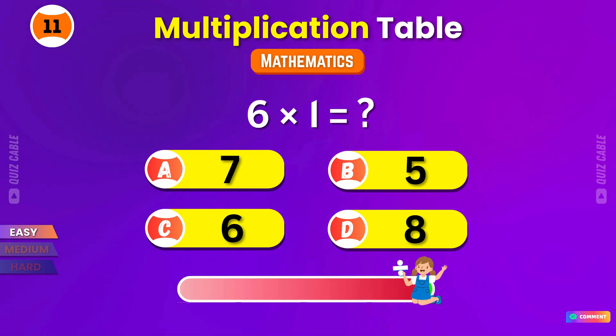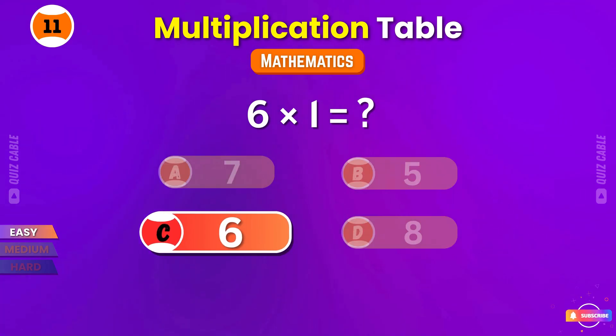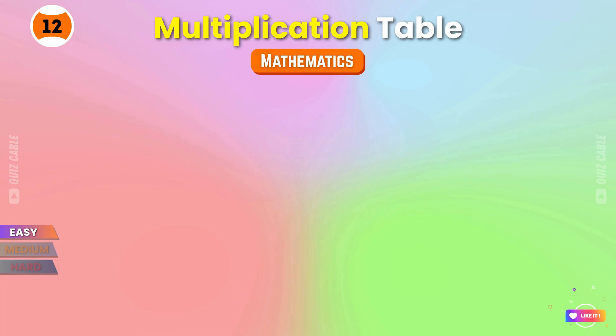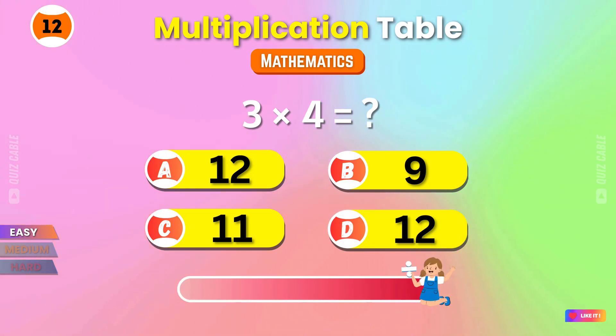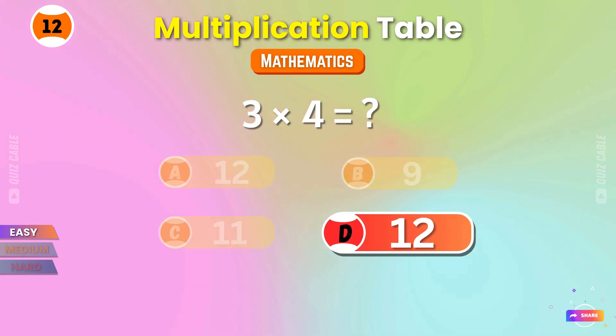6 times 1? 6! Awesome speed! 3 times 4? 12! That's quick thinking!